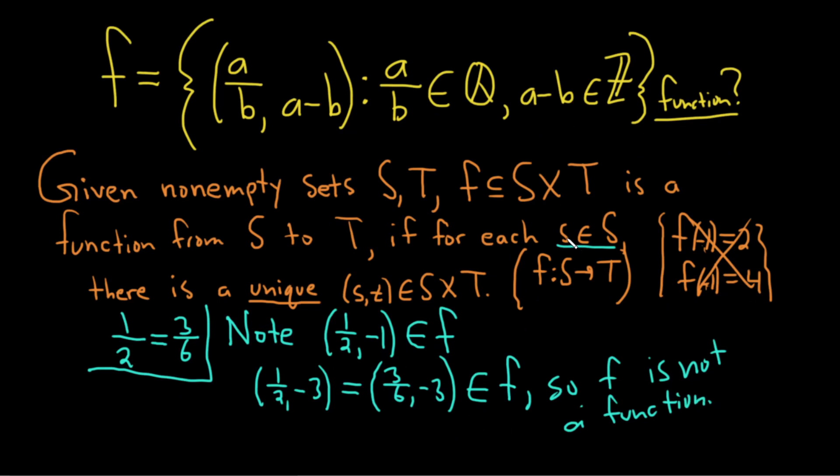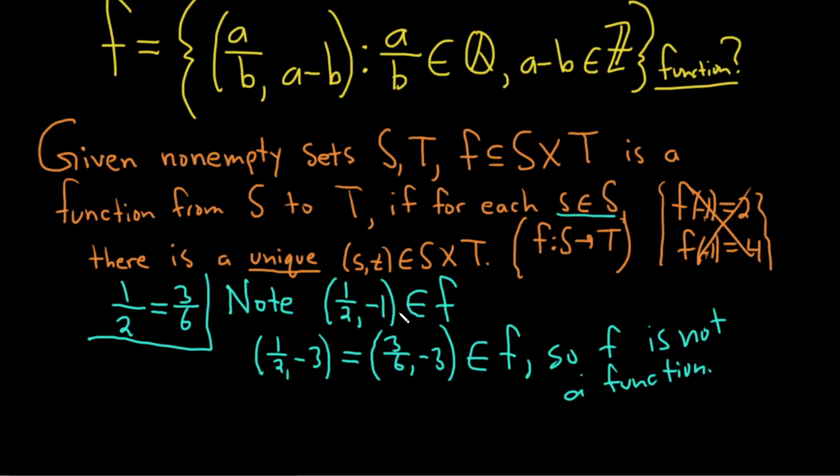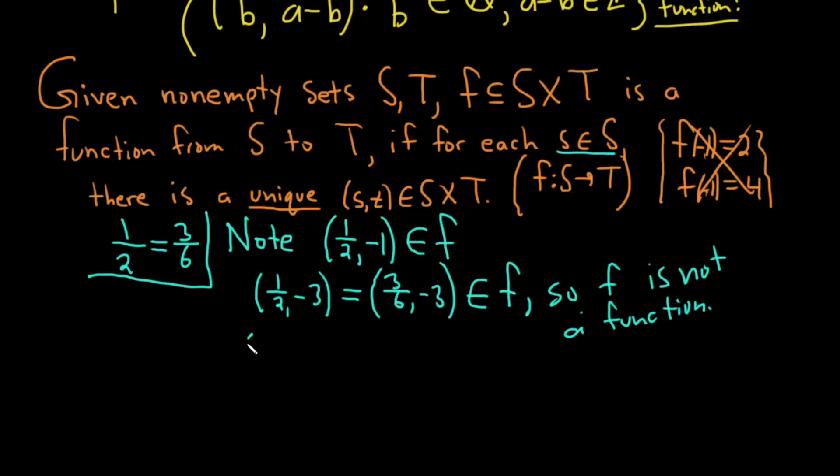So we found a value of s, an element in our domain, right? Big S is called the domain, such that we ended up with two different ordered pairs in f. And actually, you can create more, right? You can go nuts.